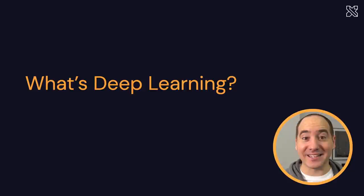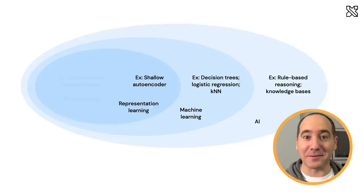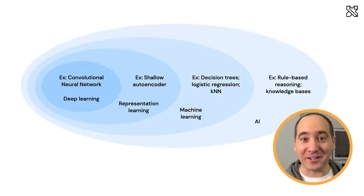With those demos out of the way, let's look at what deep learning actually is. I borrowed this diagram from the deep learning book by Ian Goodfellow and others. Roughly there are three broad circles: the outermost is AI or artificial intelligence, the second is machine learning, and the third and fourth are representation learning and deep learning, which are very closely related.